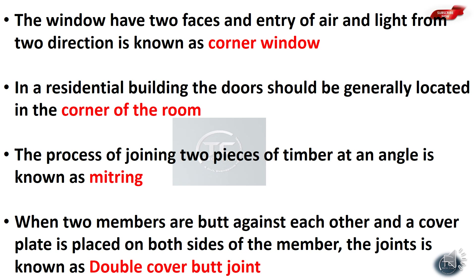When two members are butted against each other and a cover plate is placed on both sides of the member, the joint is known as a double cover butt joint.